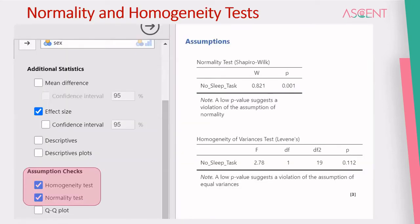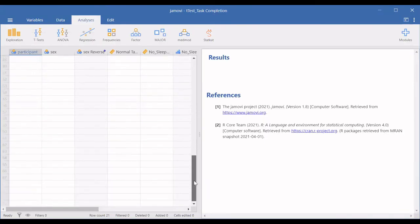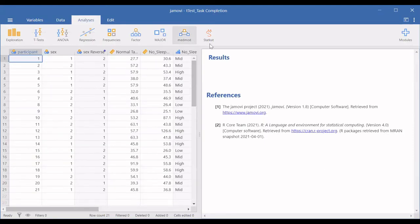There is also an option for normality and homogeneity tests within the t-test menu itself. A number of options are available. We'll try to see that using some live data — here is how the menu will look.